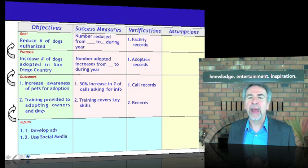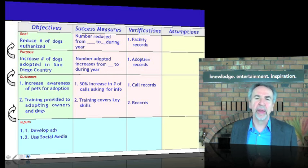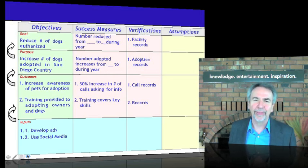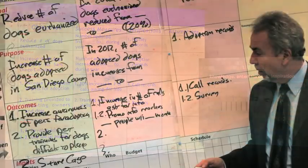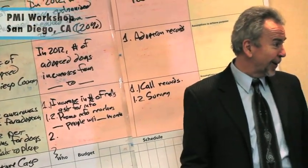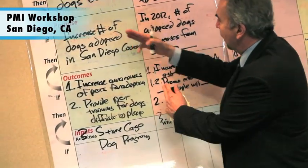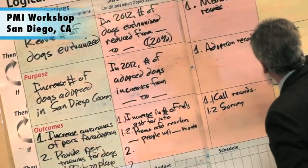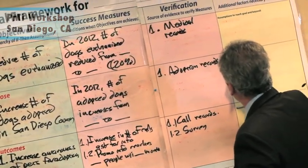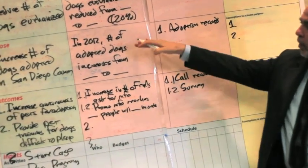Now let's add the third question: what other conditions must exist? This gets into assumptions and risk factors. Back to live action. So if these outcomes — we can achieve this purpose — provided that what? What assumptions do we have to make to go from here to here?